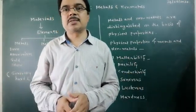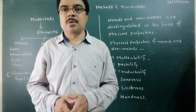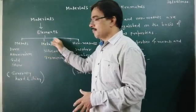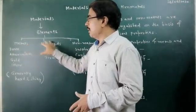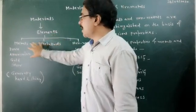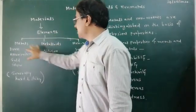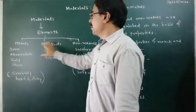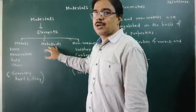In the next period, we will study chemical properties. Now, I have written metalloid here. Metalloids are a group of elements which have properties of both metals and non-metals. They are in between metals and non-metals.